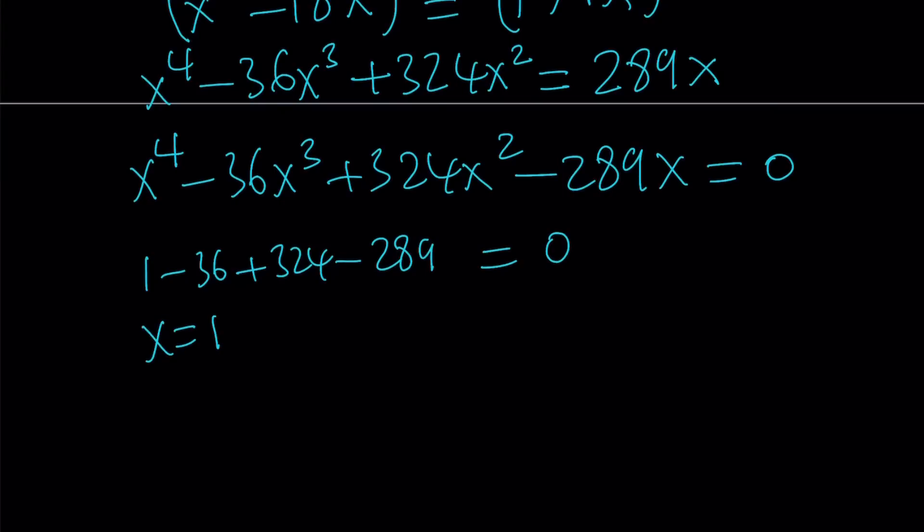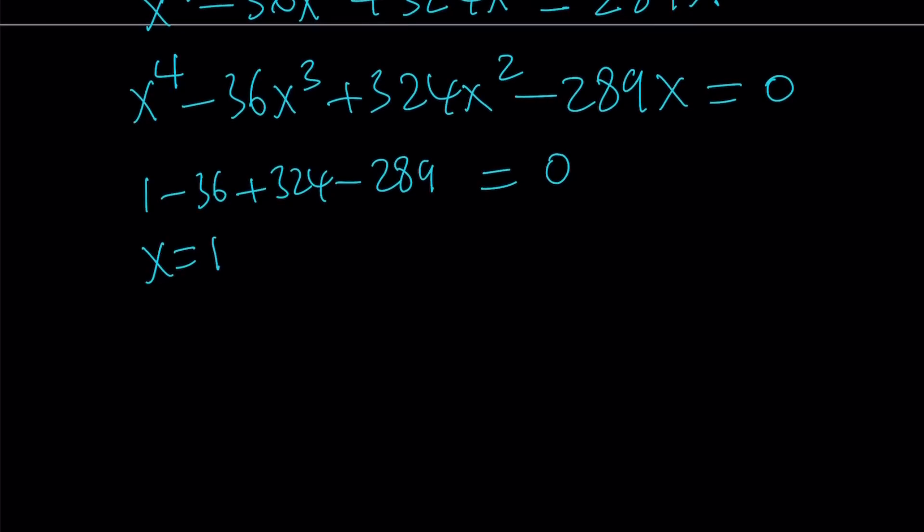But not only that, a more obvious solution here is x equals 0 because x can be factored out. So that's kind of nice. And to keep a long story short, to save you all the trouble, I'm going to factor out an x, and I'm going to factor out an x minus 1, and I'll give you the other factor.